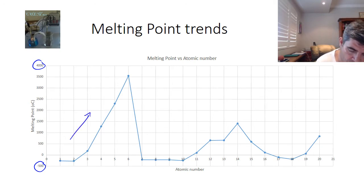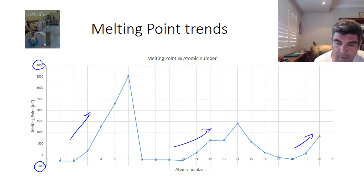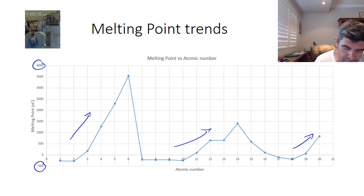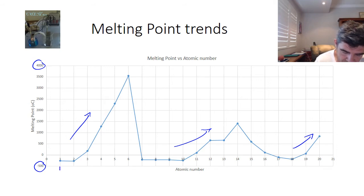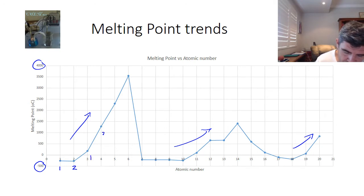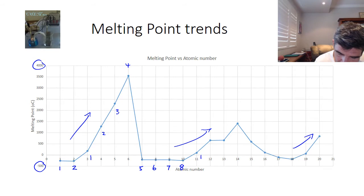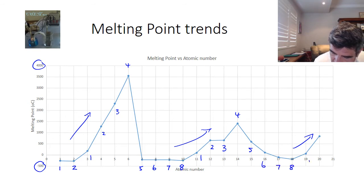There's a region where the melting point goes up here, and then it goes up here, and then it goes up again here. The first thing we might want to do is look at the fact that this is group 1, this is group 2, then we're back to group 1, group 2, group 3, group 4, 5, 6, 7, 8, then back to 1, 2, 3, 4, 5, 6, 7, 8, then 1 and 2.